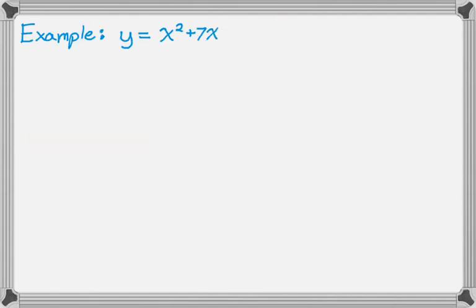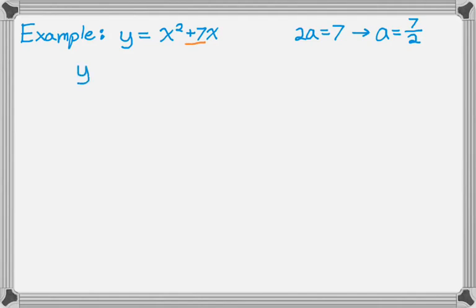Let's look at another one. Here we have y equals x squared plus 7x. Same idea: the plus 7 corresponds to 2a, so 2a is 7, which means a must have been 7 halves — so it's a fraction. I want to add 7 halves squared, which is 49 over 4, and add it to both sides. So I get plus 49 over 4 on both sides and the equation remains balanced.